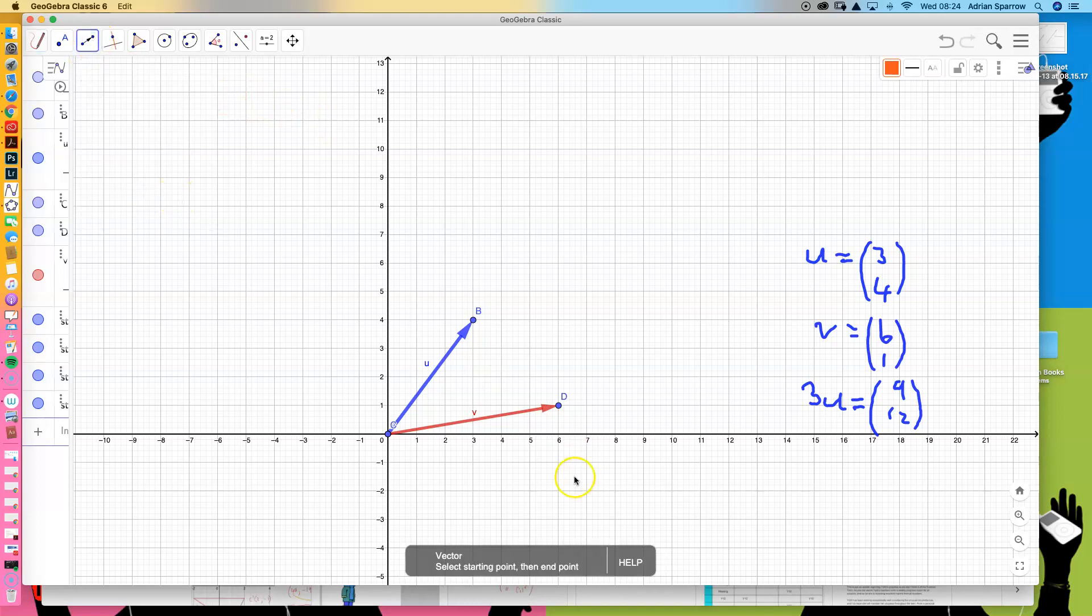I can come here and draw the vector. Let me start it there. I'm going to go along 9 and then up to 12, which is exactly there. Now what you can see is that that vector is parallel, or in fact collinear, because it's in exactly the same place as vector u. So that's the first thing we can do: scalar multiplication.